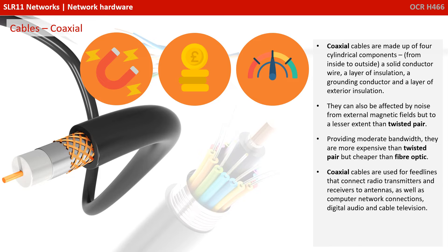Providing moderate bandwidth, they're more expensive than twisted pair but cheaper than fibre optic. Coaxial cables are used for feed lines that connect radio transmitters and receivers to antennas, as well as computer network connections, audio and cable television.